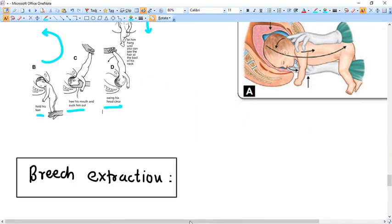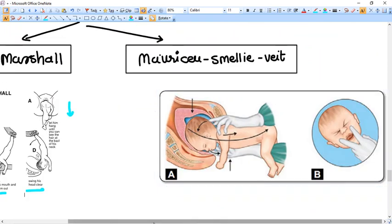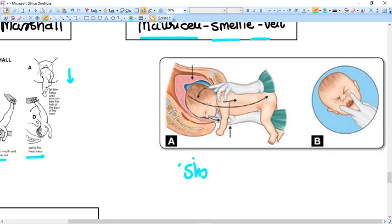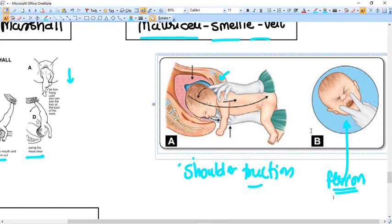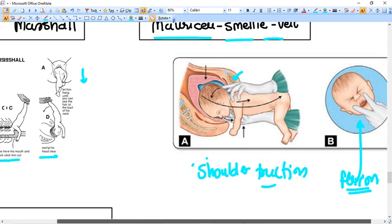Now another maneuver is the fourth maneuver, the last maneuver in this video is Mauriceau Smellie Veit maneuver that is shoulder traction plus palmar flexion. Shoulder traction is given by putting the upper hand here and simultaneously you do flexion of the head with the help of palmar fingers to be put on the chin of the fetus. So the lower, so the smallest diameter of head can come out.